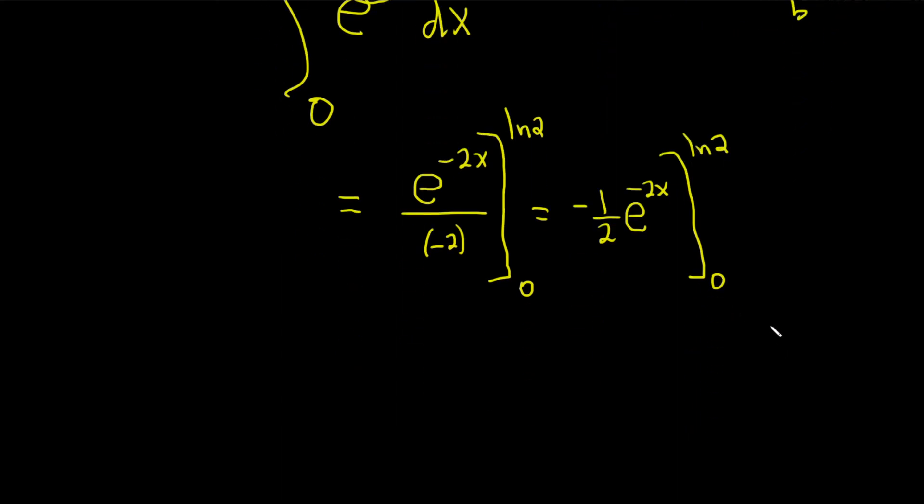All right, we plug in the top number first. So this is equal to negative 1 half e. I'm going to leave the negative 1 half on the outside. Negative 2 natural log of 2, plugging in natural log of 2 for the x. Then minus e to the negative 2, and then plugging in 0 for the x, it's just 2 times 0.